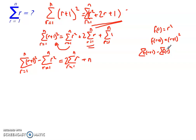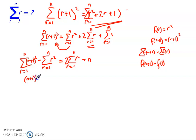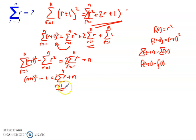Using the telescoping rule from previous calculations, the sum of f(r+1) minus the sum of f(r) can be rewritten as f(n+1) minus f(1). Here f(r) = r², so f(n+1) = (n+1)² and f(1) = 1. The left-hand side becomes (n+1)² − 1, which equals 2 times the sum from r equals 1 to n of r, plus n. Now we make the sum of r the subject.